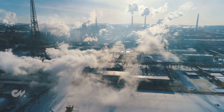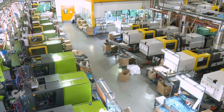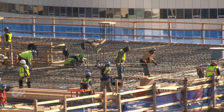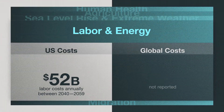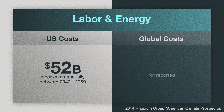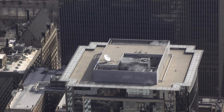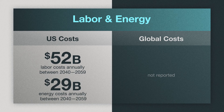Labor and energy. As a result of increases in global average temperature, we are already beginning to see a deterioration in working conditions across industries that rely on both indoor and outdoor labor. The cost of changes in labor productivity alone overshadow the impact of extreme weather and sea level rise, with around $50 billion in estimated damages by 2059. Additionally, energy costs are expected to rise with increased demand for cooling systems and changes to urban infrastructure. Though demand for heating systems may decrease, this will not be enough to offset the demand for air conditioning as the standard of living in developing countries rises. Total price tag: $30 billion by 2059.